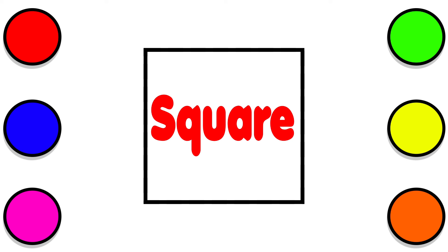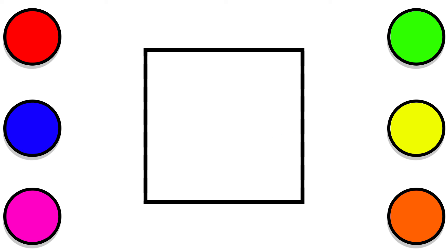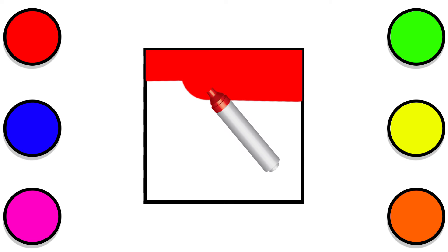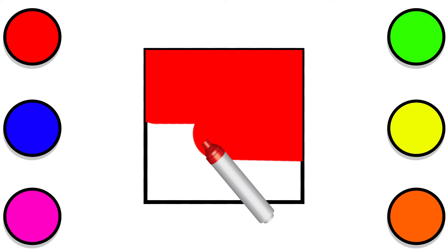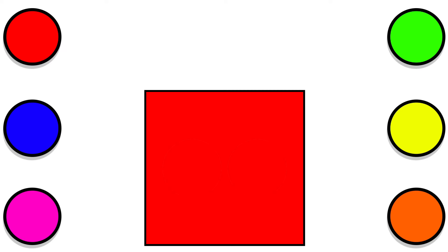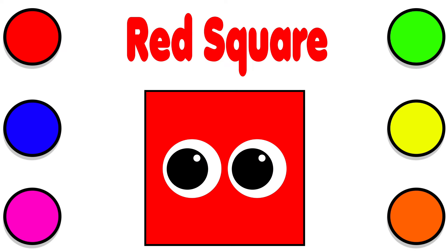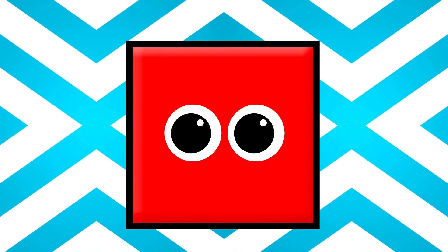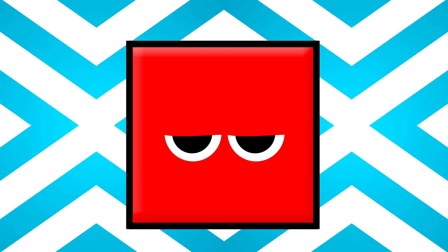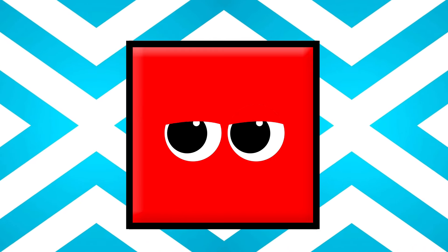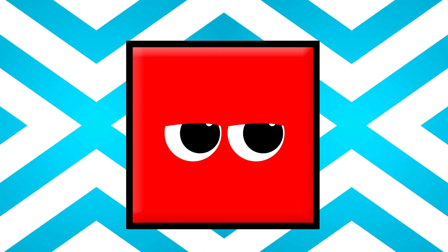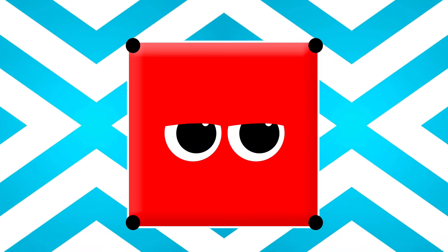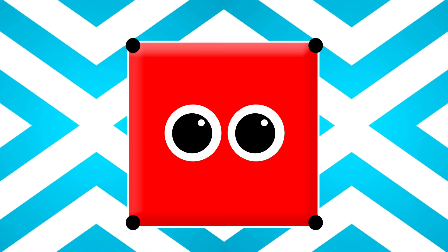Square. Red Square. A square has four sides. They are equal, and it has four corners.